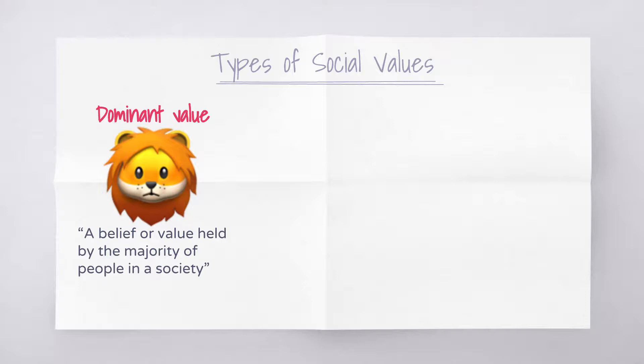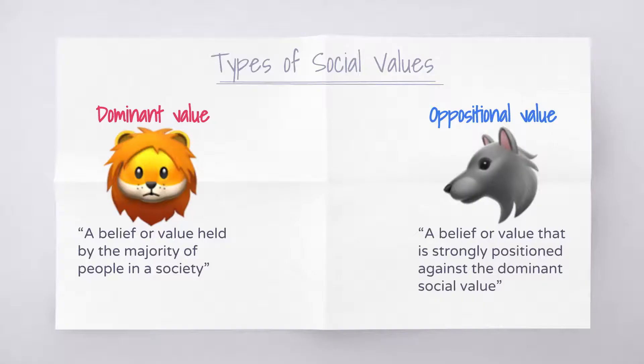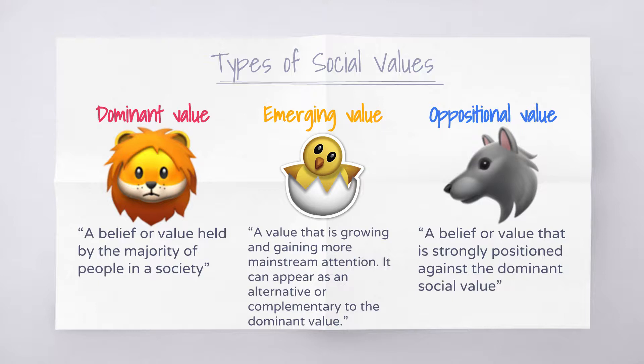The oppositional value is the value that is positioned strongly against the dominant value. It is not held by the majority, and might only be held by a few people in society, or it might be held by 49% of society. Either way, it is strongly positioned against — it is the polar opposite of the dominant value. Finally, an emerging value is one that is steadily growing in popularity in a society. It is not necessarily new, but it's certainly growing. An emerging value might be positioned with the oppositional value, or it might be a value that is closely aligned to the dominant value but just has a slight tweak to it.